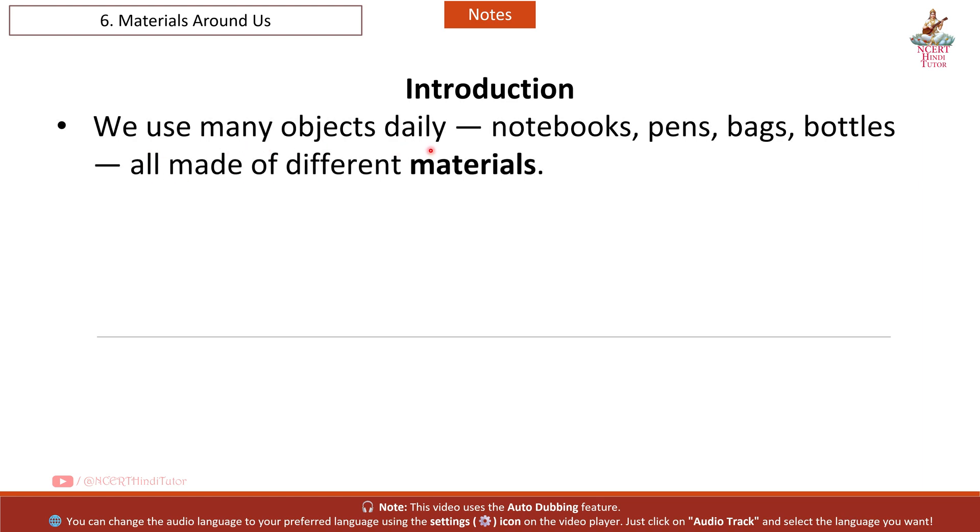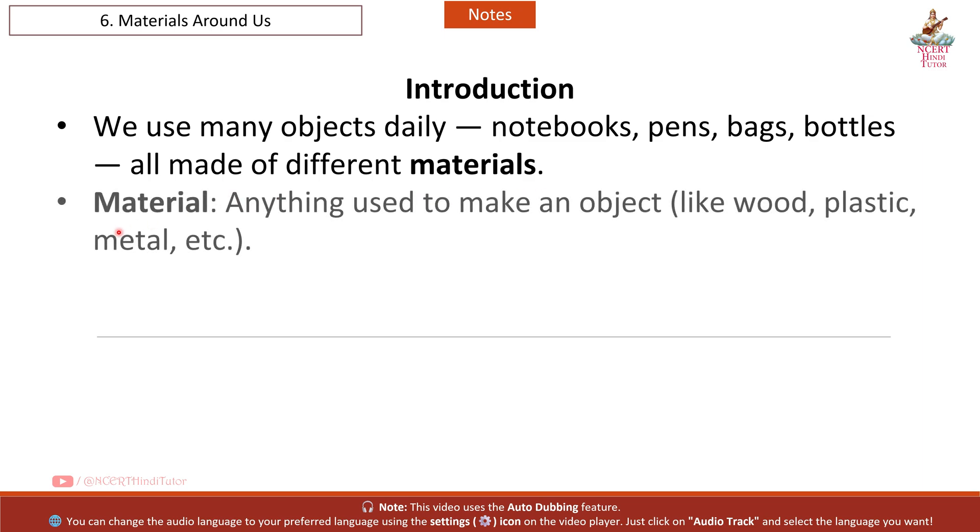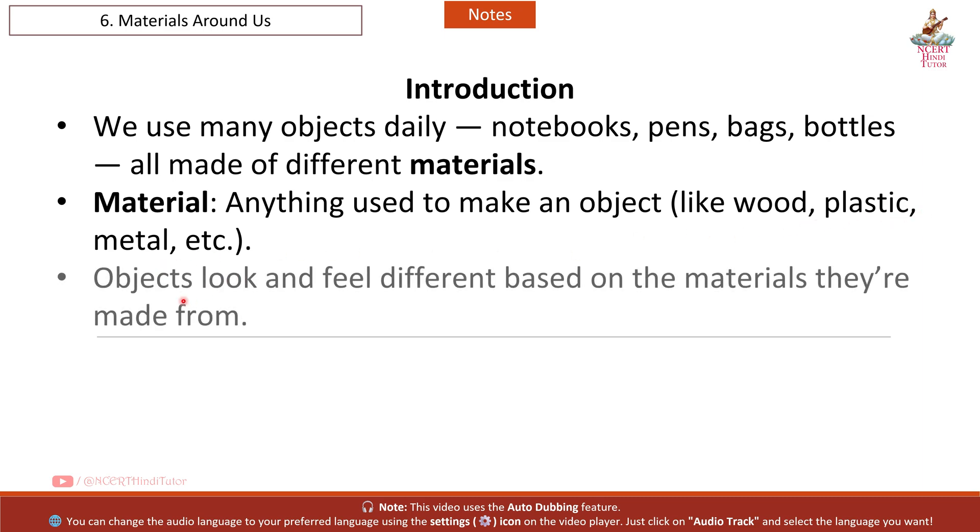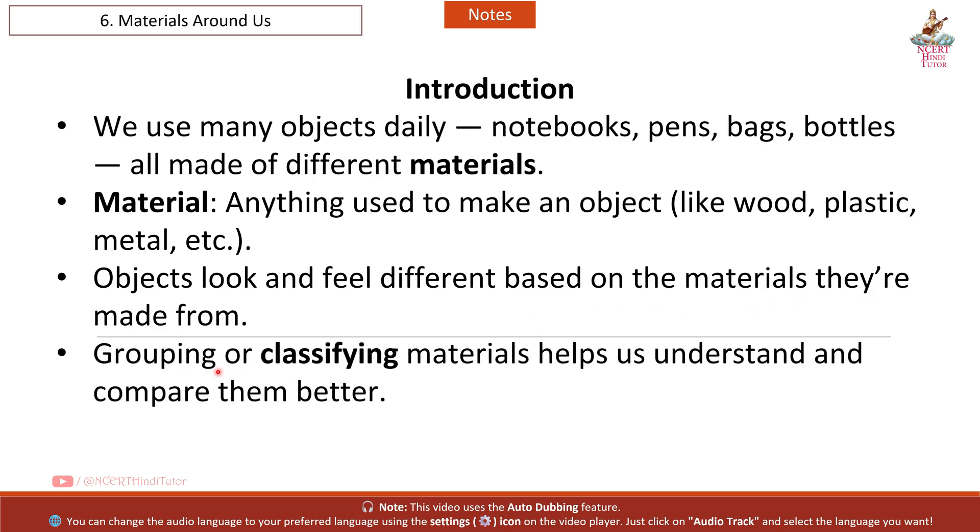Introduction. We use many objects daily: notebooks, pens, bags, bottles, all made of different materials. Material is anything used to make an object like wood, plastic, metal, etc. Objects look and feel different based on the materials they are made from. Grouping or classifying materials helps us understand and compare them better.